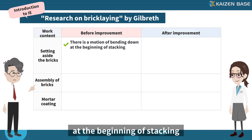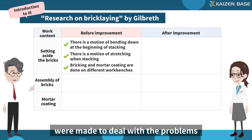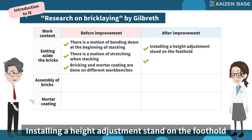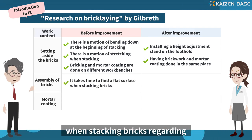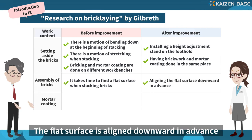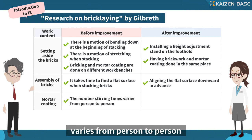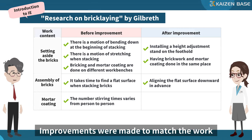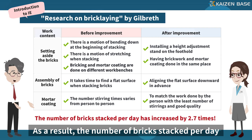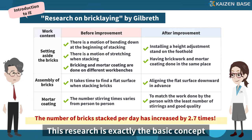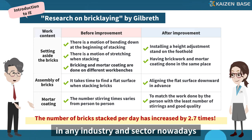The problems identified included: a motion of bending down at the beginning of stacking, a motion of stretching when stacking, and bricklaying and mortar coating being done on different work benches. Improvements made included installing a height adjustment stand on the foothold and having brickwork and mortar coating done in the same place. It was also found that it took time to find a flat surface when stacking bricks, so the flat surface was laid downward in advance. Furthermore, the number of stirring times for mortar coating varied from person to person, so improvements were made to match the work of the person with the fewest stirrings and good quality. As a result, the number of bricks stacked per day increased by 2.7 times — representing the basic concept of improvement activities still relevant in any industry today.